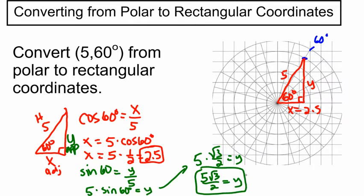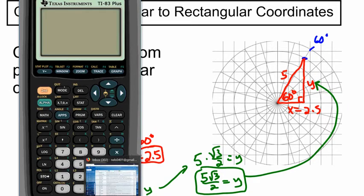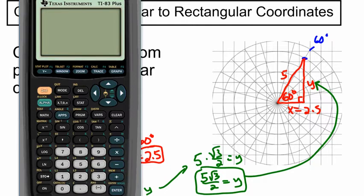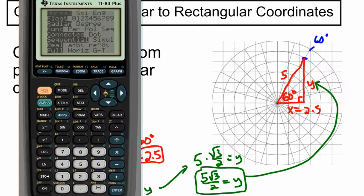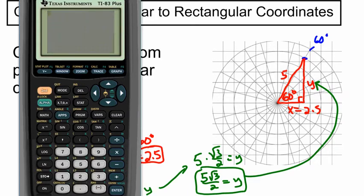If you want a decimal approximation, all you have to do is bust out your calculator. And I'm going to make sure that I'm in degree mode. I'm doing stuff with degrees. And I'm going to do cosine, excuse me, sine of 60. Multiply that by 5. And I get 4.33. So 5 root 3 over 2 is 4.33. Or you could just type in 5 root 3 over 2. Just to prove to you that we did it right, there's 5 square root 3 divided by 2. And we get 4.33.